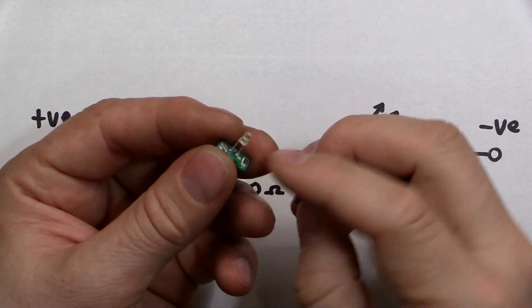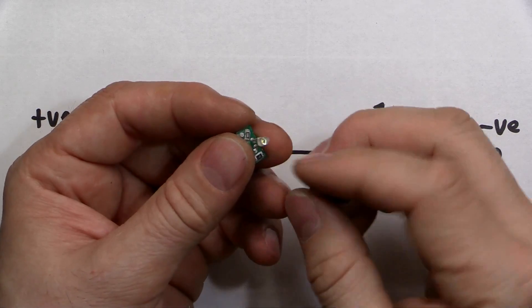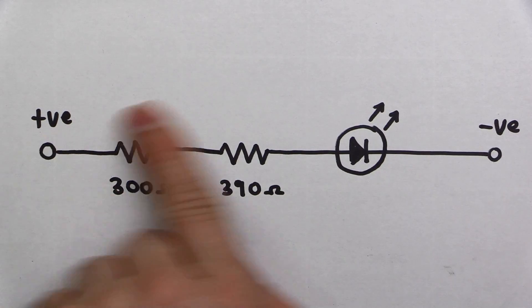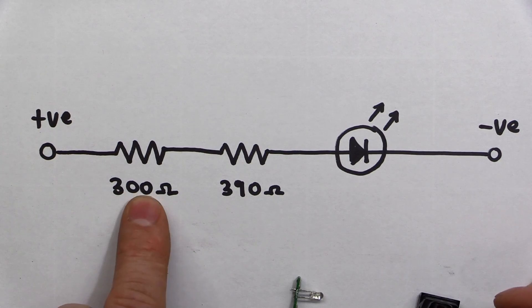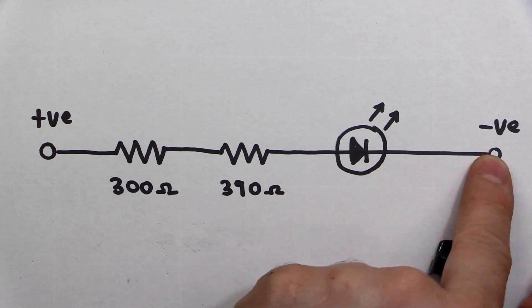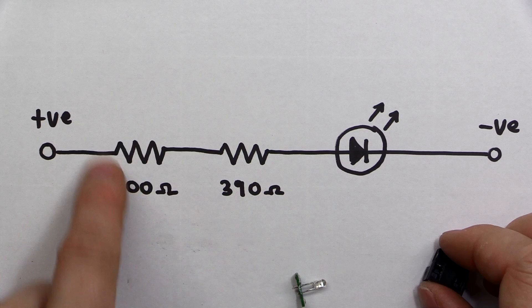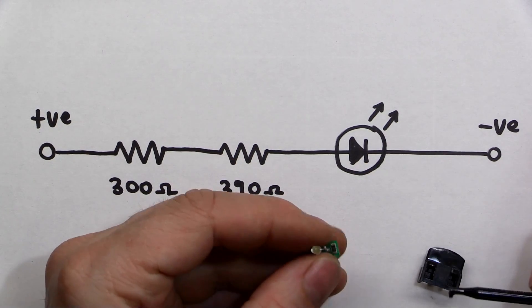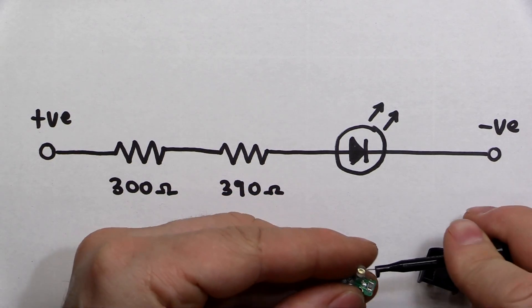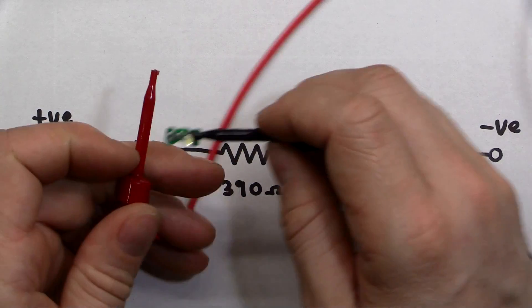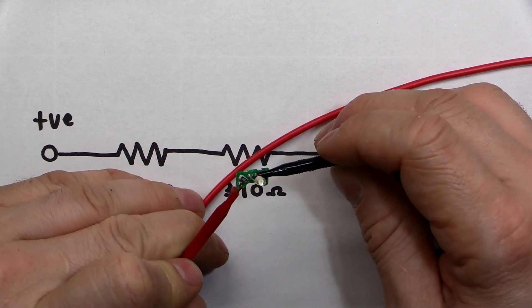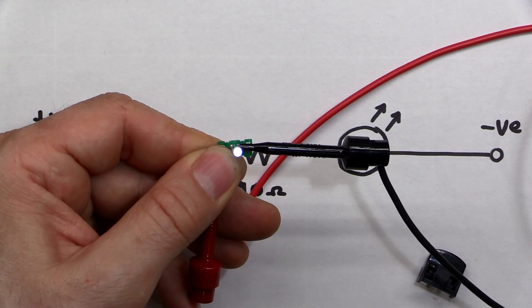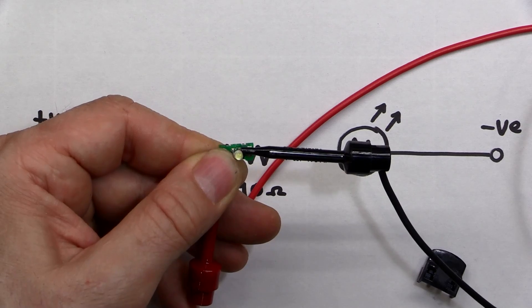So I managed to split this open. There was some white silicon caulking or potting in there which I managed to gouge away. But it turns out this is what we've got inside. Positive comes in, 300 ohm resistor, then a 390 ohm resistor, white LED and then negative out. It looks like they split the resistor into two. But it turns out the LED does actually work. I'll hook it up and show you. If I turn the voltage up, it's definitely working. So that's not the problem.